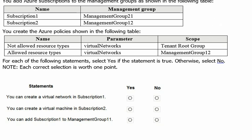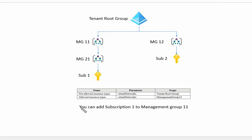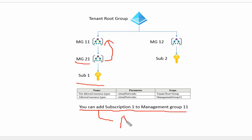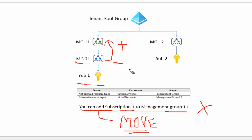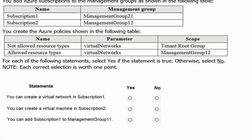Statement 3: you can add subscription 1 to management group 1.1. Right now subscription 1 is under management group 2.1. The question asks if we can add it to management group 1.1 as well. However, we cannot add one subscription to multiple management groups — that is not possible. We can only move a subscription from one management group to another. So the answer is No. We must be careful in the exam: 'add' implies it would remain in both, which is not allowed.